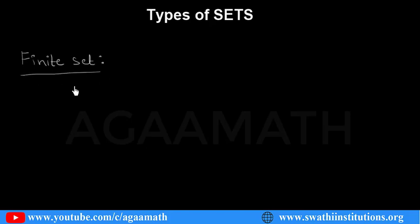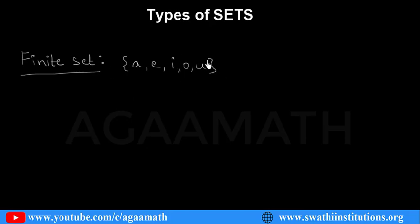So what is a finite set? If a set contains a countable number of elements — for example, take the set A, E, I, O, U. How many elements do we have? We can count: 1, 2, 3, 4, 5 — so 5 elements. This set is said to be a finite set. If a set contains a countable number of elements, such a set is said to be a finite set.